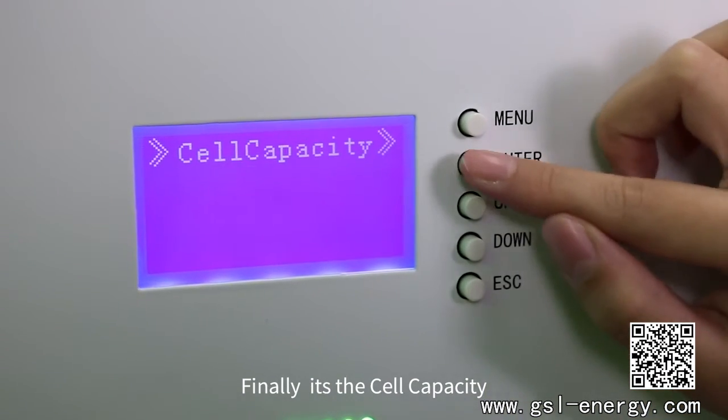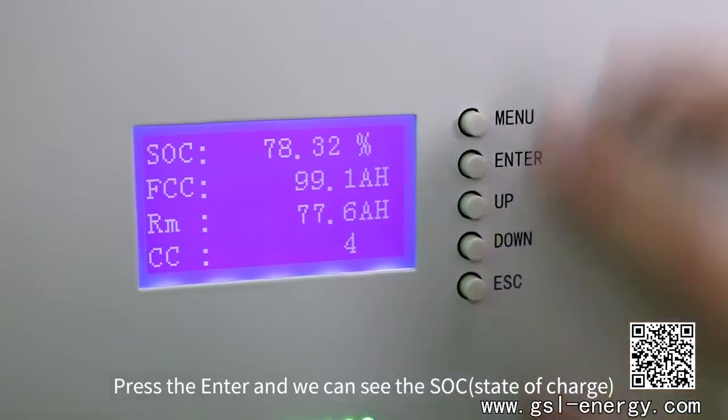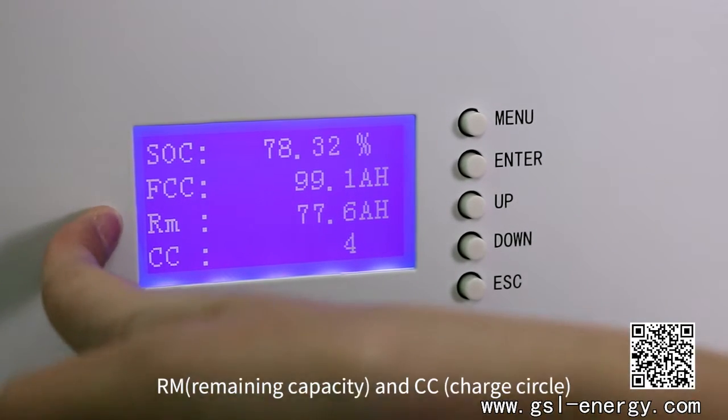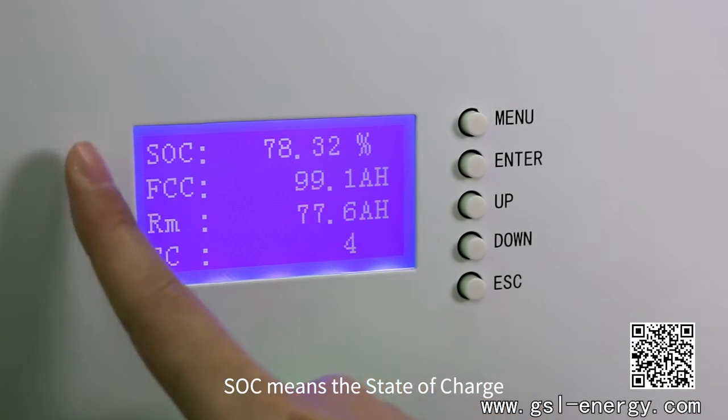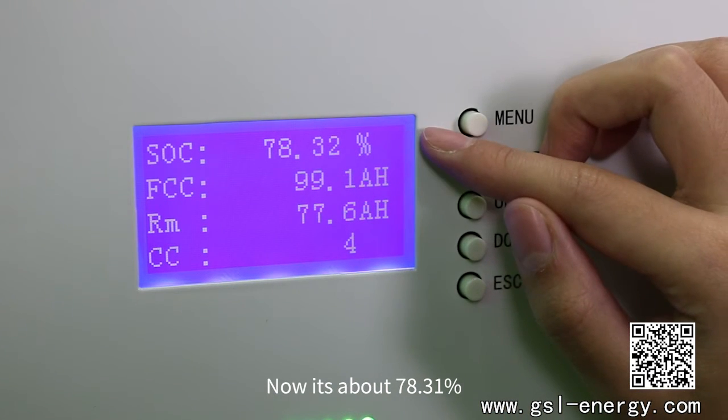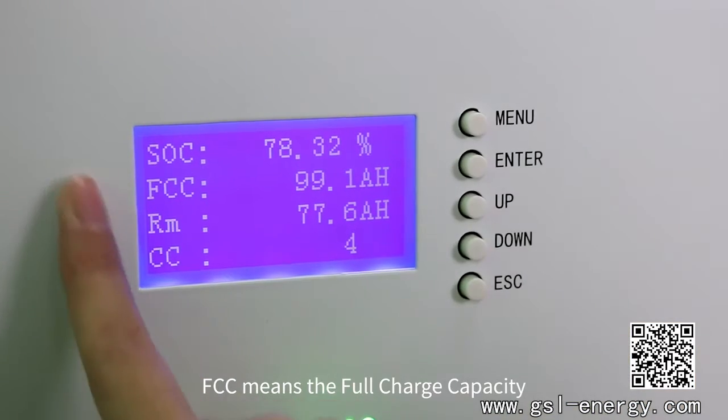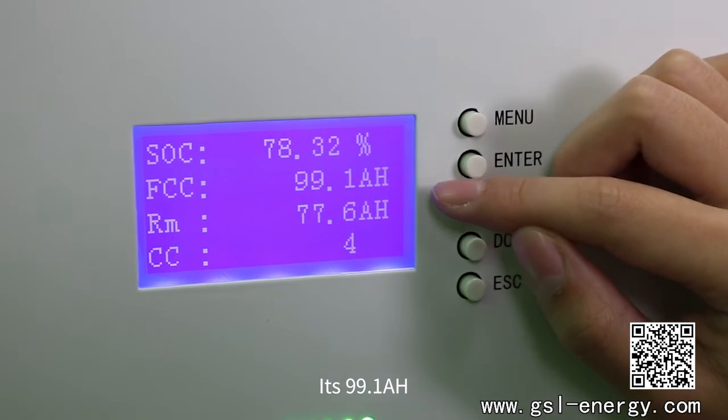Finally is the cell capacity. Press the enter and we can see the SOC, FCC, RM, and CC. SOC means the state of charge, now is about 78.31%. FCC means the full charge capacity is 99.1 amp hour.